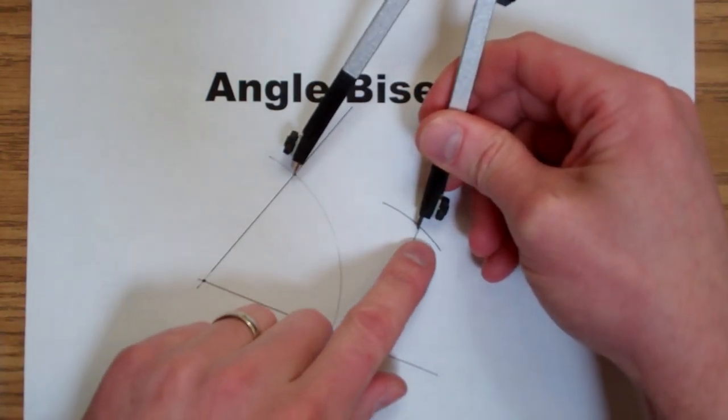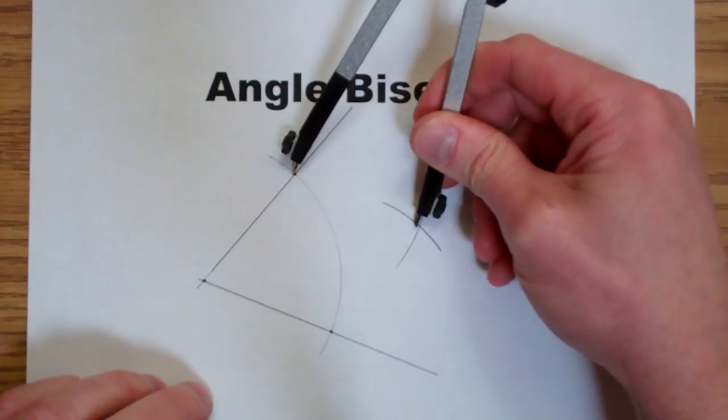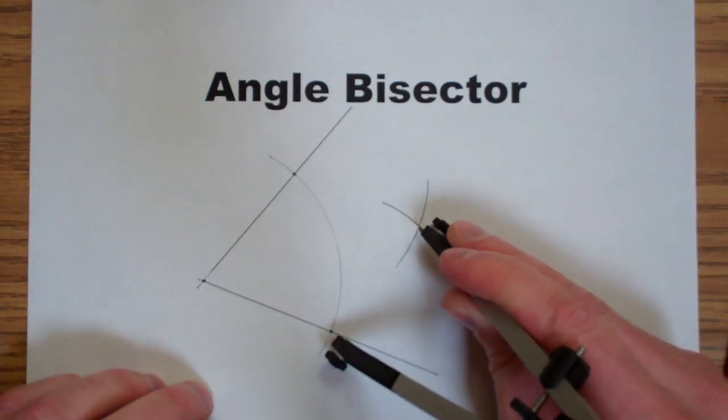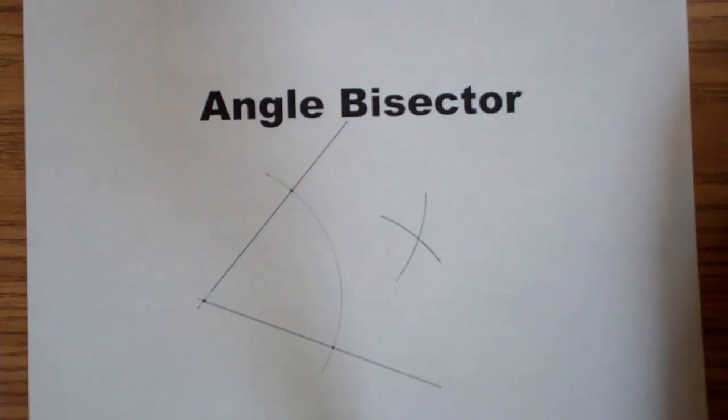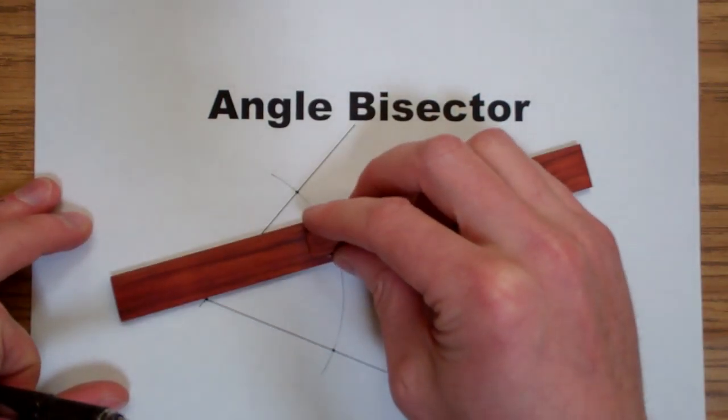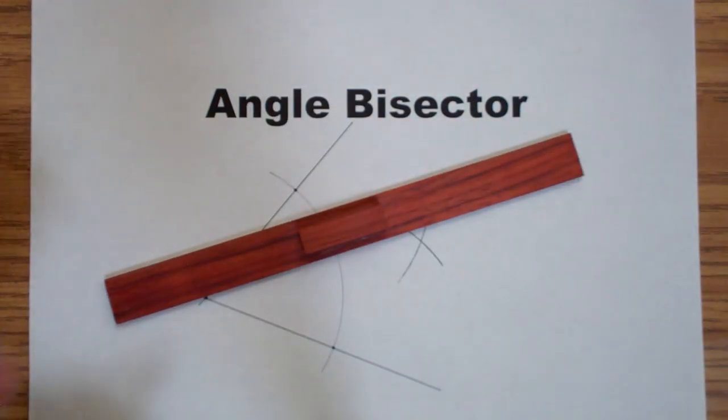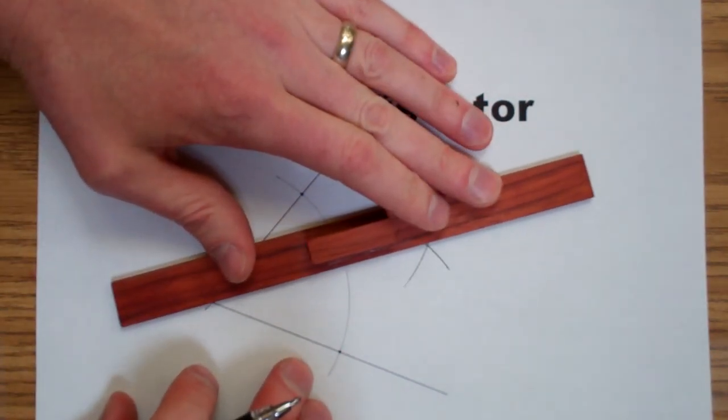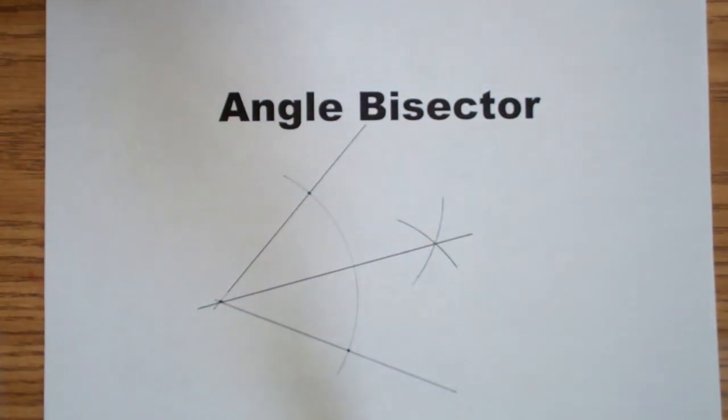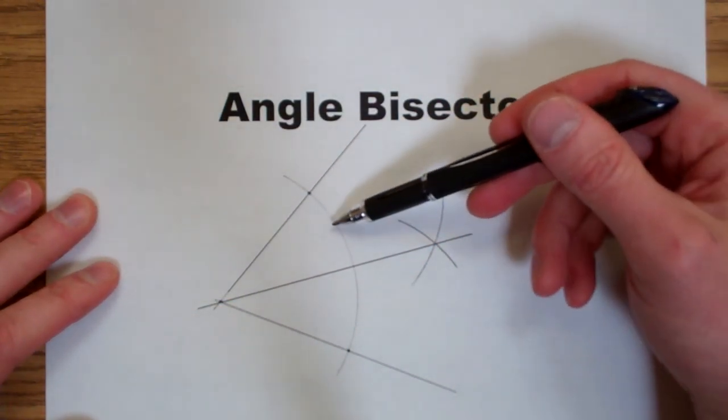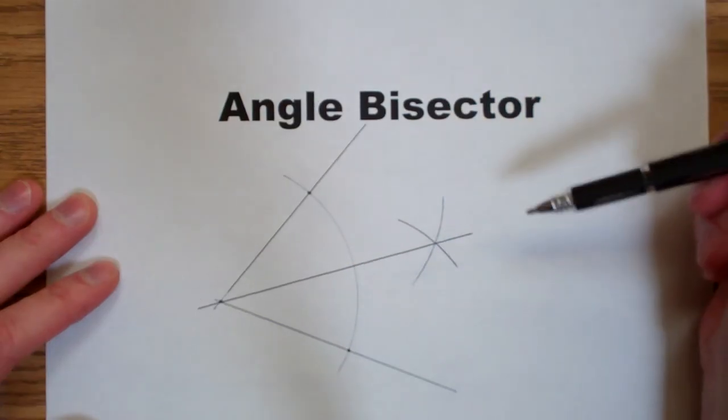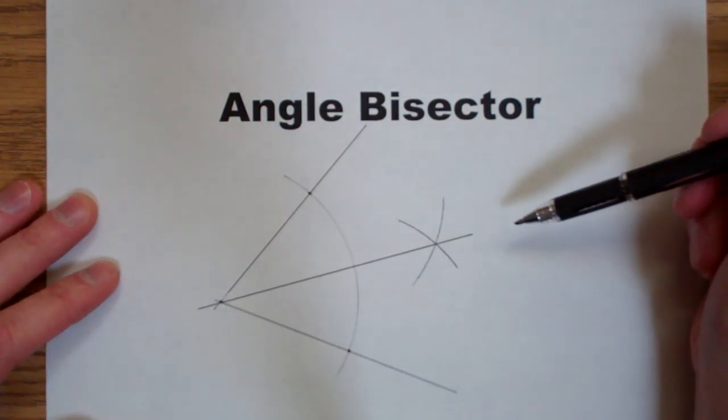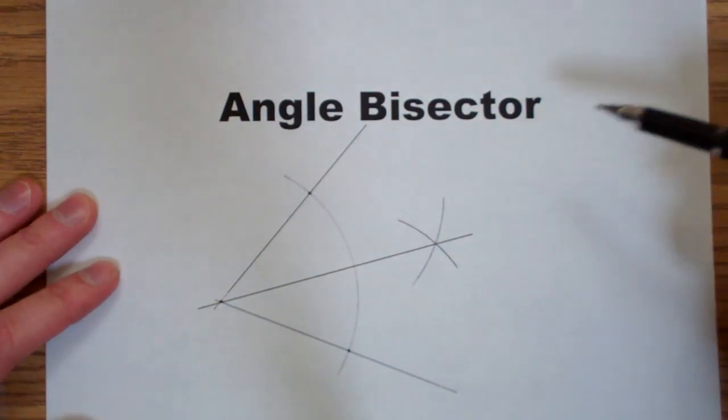Now this new point is equidistant from both this side and this side of the angle. To complete this construction we use our straight edge to connect the vertex and this new point. Now we have two congruent angles bisected by this line.